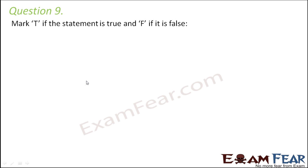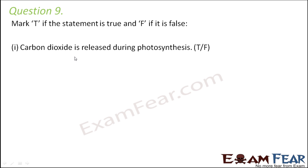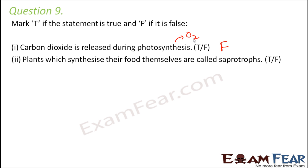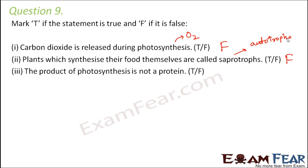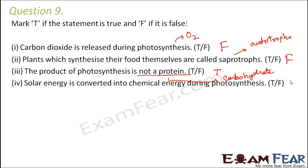Question number 9. Mark true or false. Carbon dioxide is released during photosynthesis — this is false, because during photosynthesis, oxygen is released, not carbon dioxide; in fact, carbon dioxide is utilized during photosynthesis. Plants which synthesize their own food are called saprotrophs — again, incorrect; such plants are called autotrophs, as auto means self, so they are self-dependent. The product of photosynthesis is not a protein — that is correct, because the product of photosynthesis is a carbohydrate. Solar energy is converted into chemical energy during photosynthesis — yes, that is true; solar energy is trapped by chlorophyll, converted into chemical energy, which then helps in the formation of carbohydrate from carbon dioxide and water.